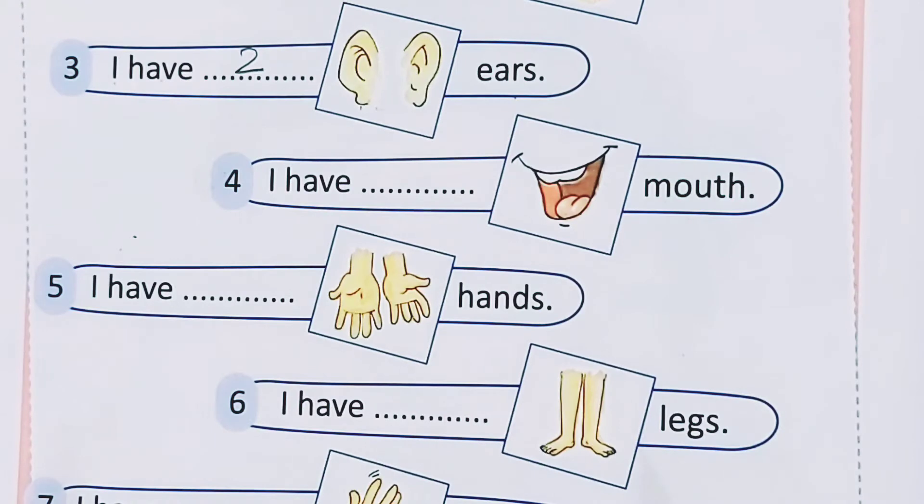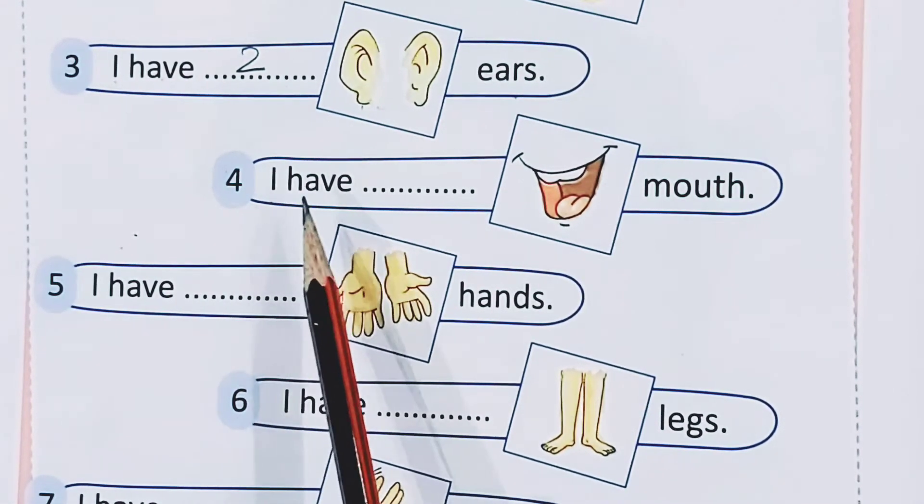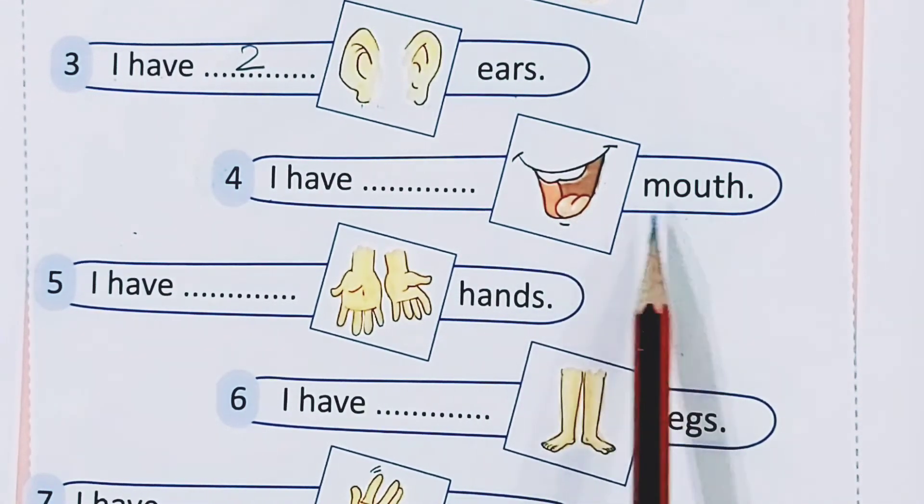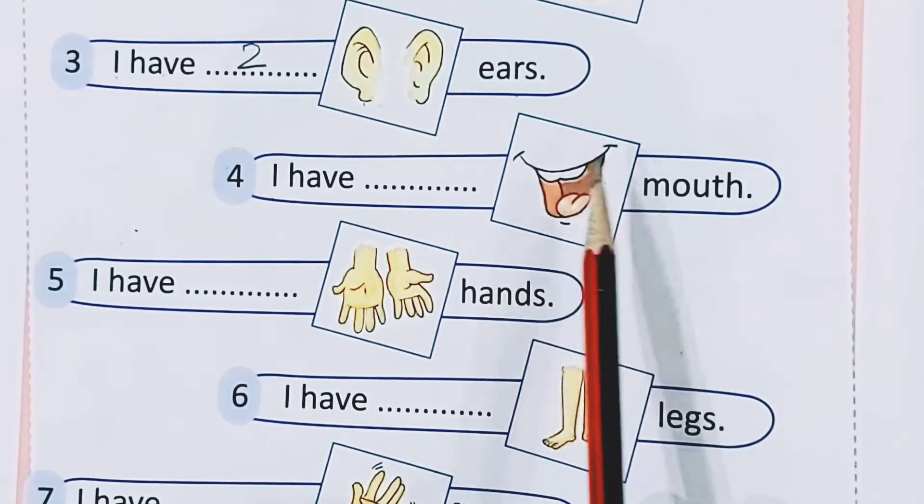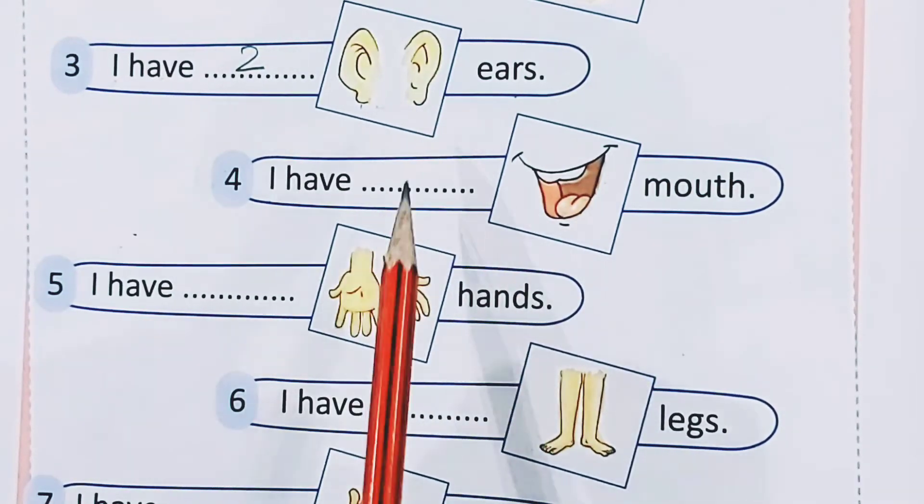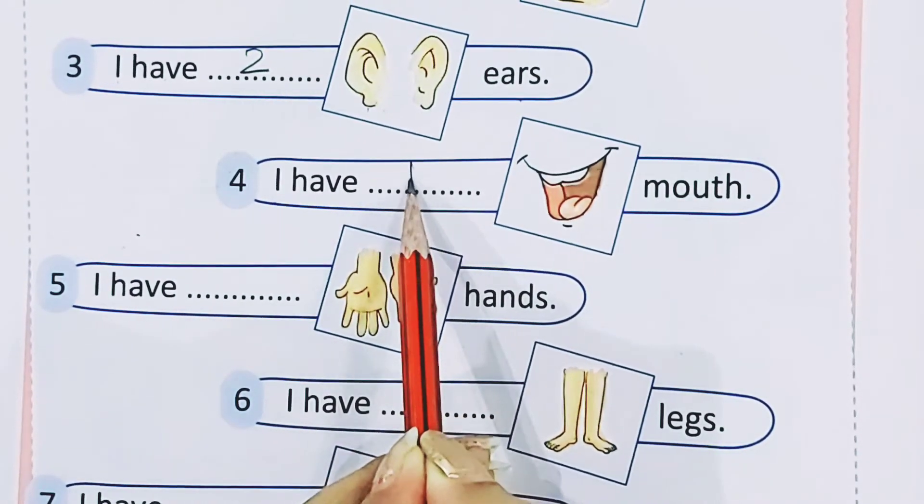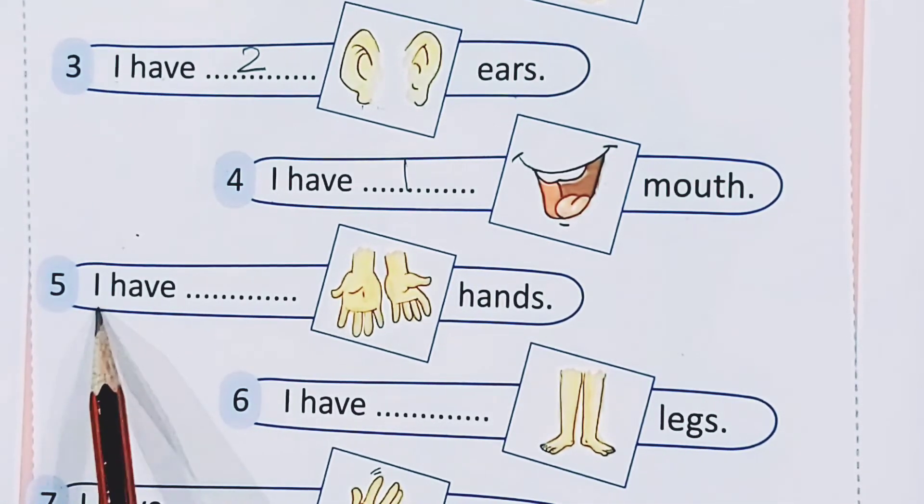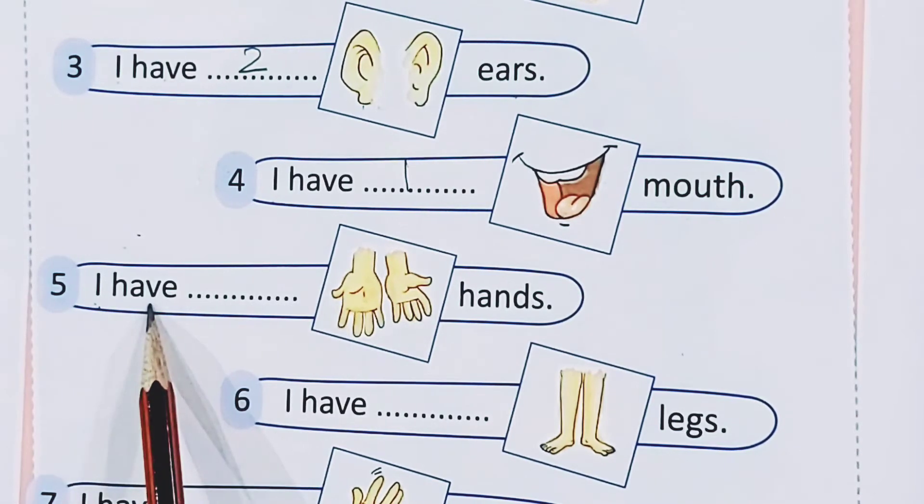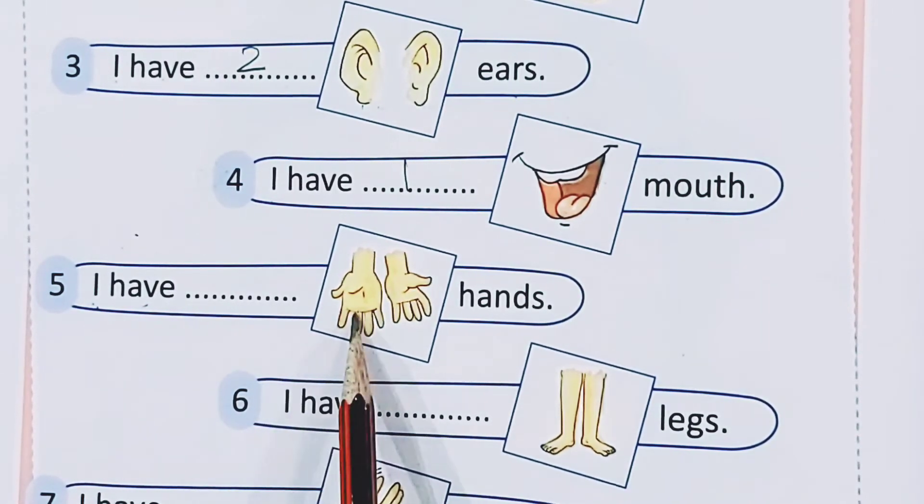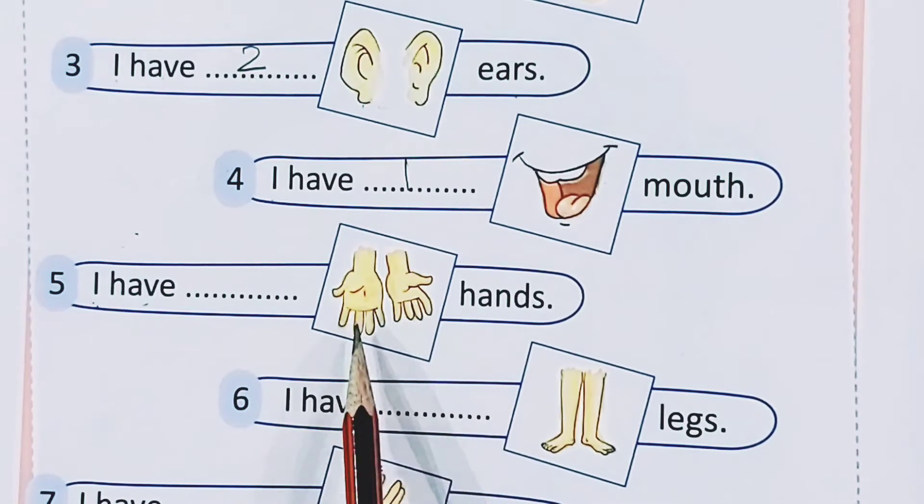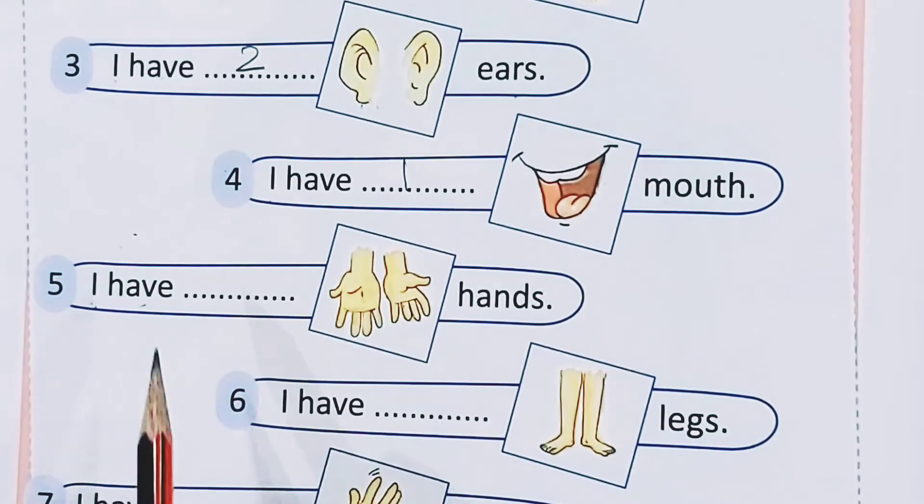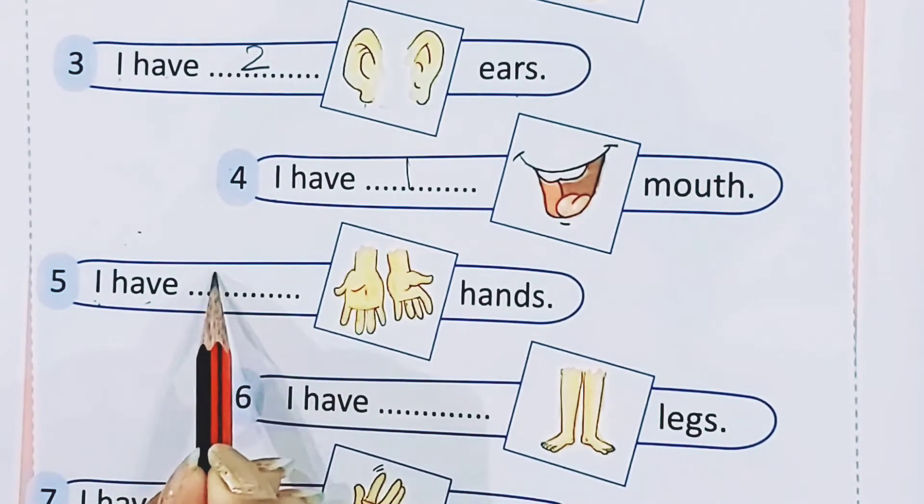Now, I have dash mouth. How many mouths? One mouth. So, we will write number 1. Now, the next is, I have dash hands. How many hands? One, two. Two hands. So, we will write number 2.